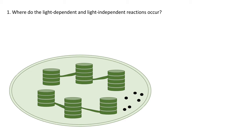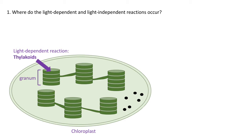The diagram below shows a chloroplast. For the light-dependent reaction, you should have said that it occurs in the thylakoids. Stacks of these thylakoids are called granum (singular) or grana (plural).